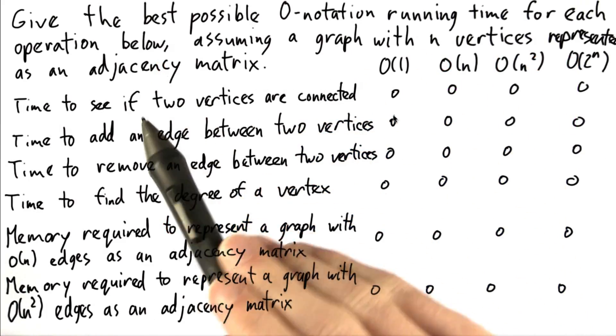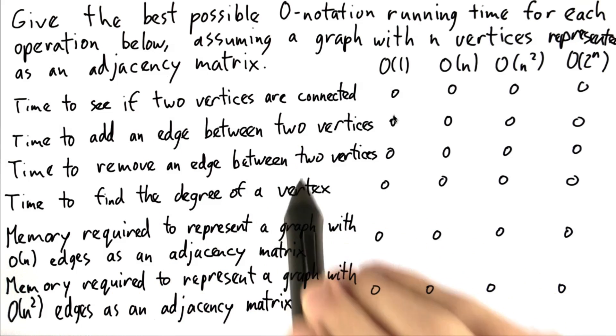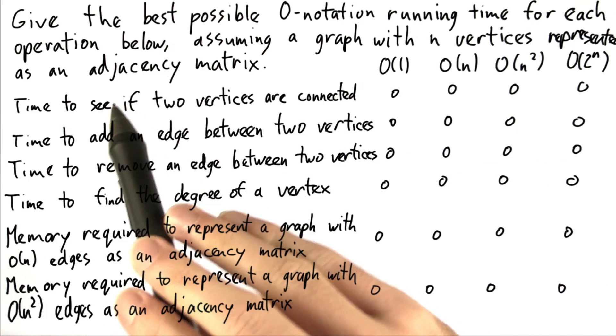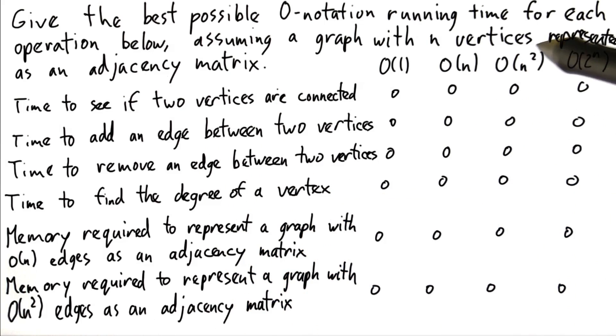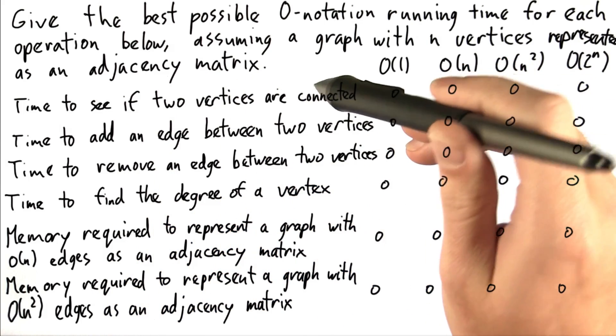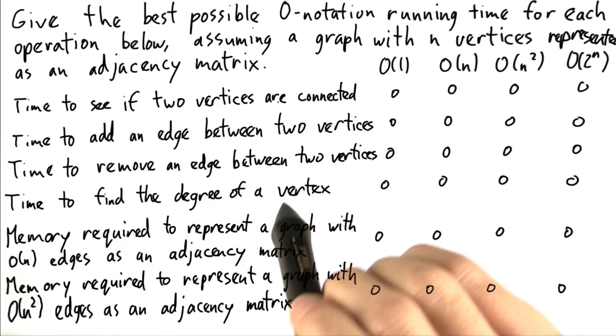Now, what I'd like you to do is give me the best possible O notation running time for each operation below. We're going to assume a graph with n vertices represented as an adjacency matrix.